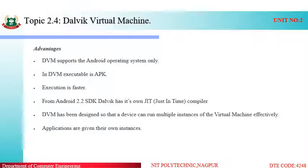Now, the main advantages of DVM: it supports only the Android operating system; the executable file is .apk; execution is faster. From Android 2.2 SDK, Dalvik has its own built-in Just-In-Time (JIT) compiler. DVM has been designed so that a device can run multiple instances of the virtual machine effectively — applications are given their own instances, which supports multitasking and multiprogramming.